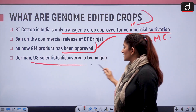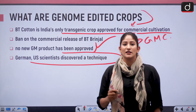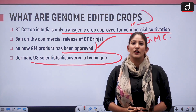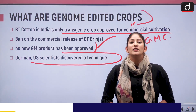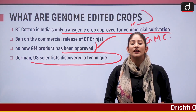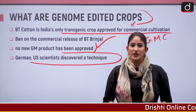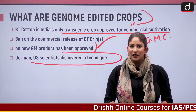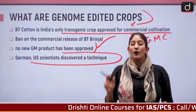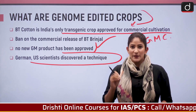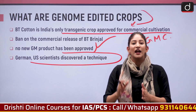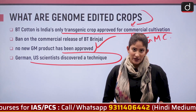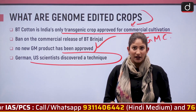German and US scientists discovered a technique a decade ago: if you edit the gene of a crop without using any foreign or alien species or alien gene to modify the outcome, that is a genetically edited crop. If you introduce a foreign species, then that is a genetically modified crop.